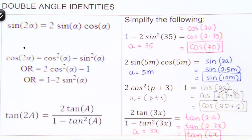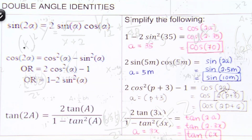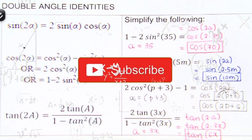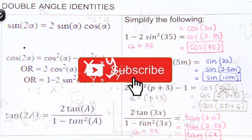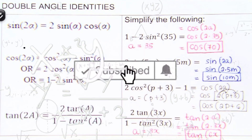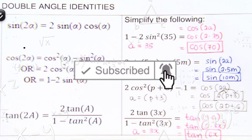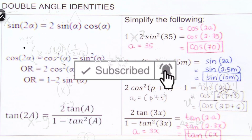There you have it. That's how we simplify trigonometric expressions using the double angle identities. If you find this video helpful, hit like and subscribe for more math videos. See ya!